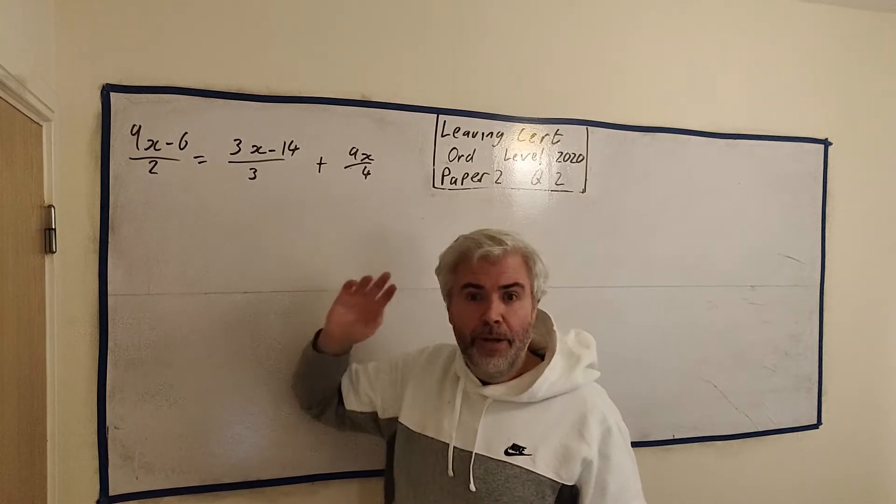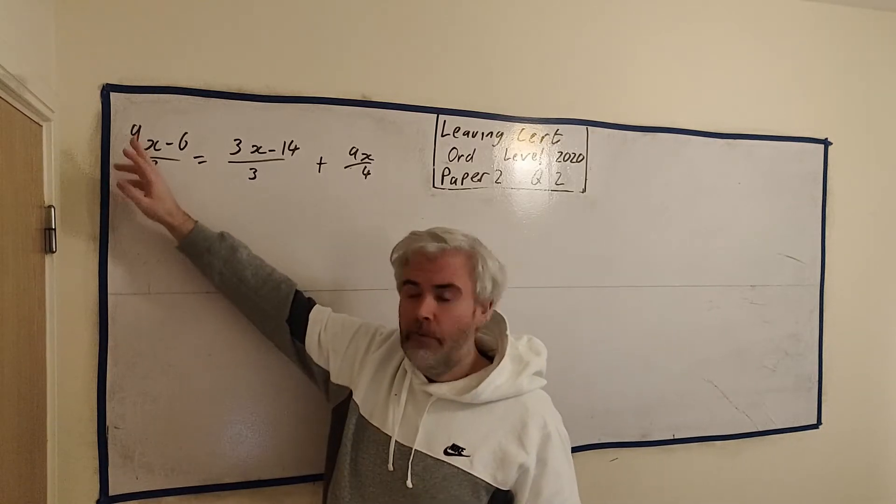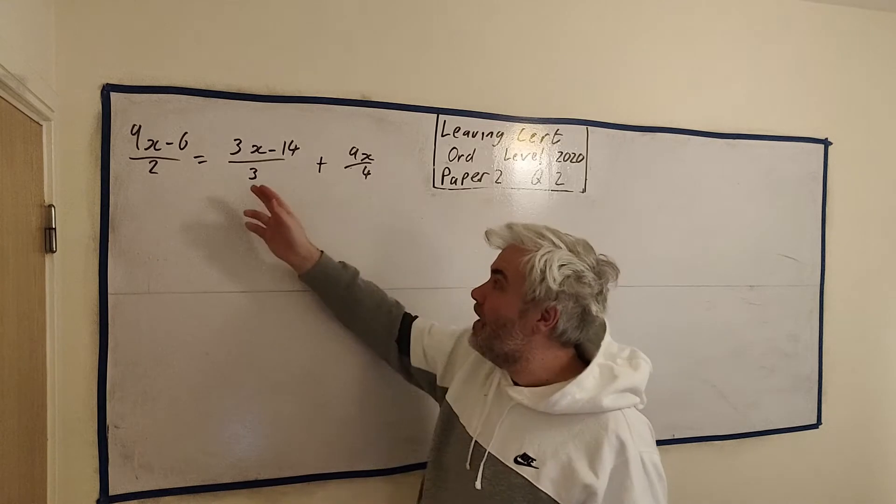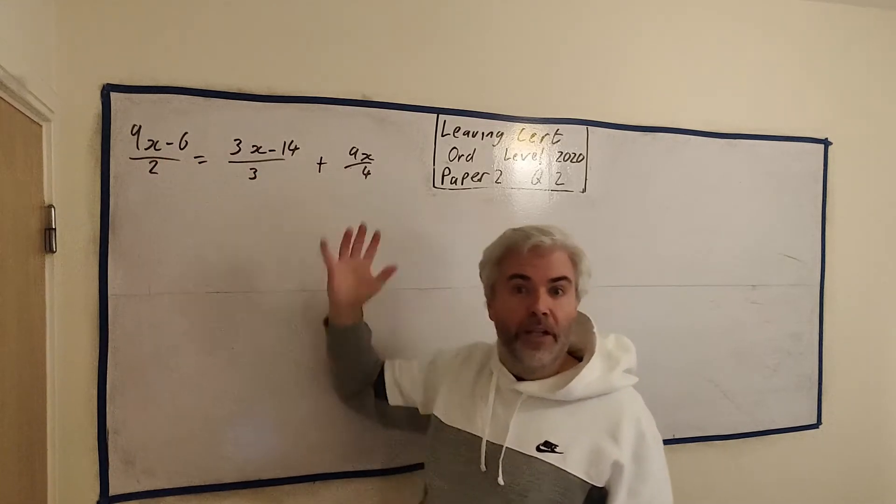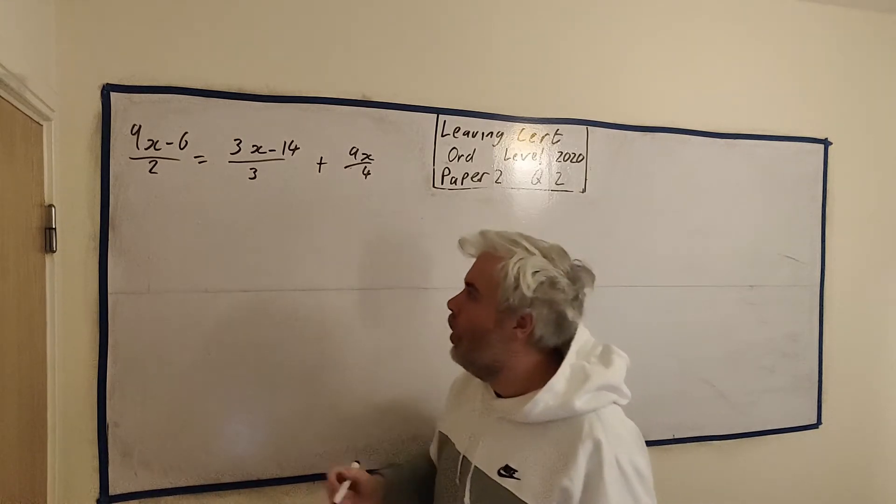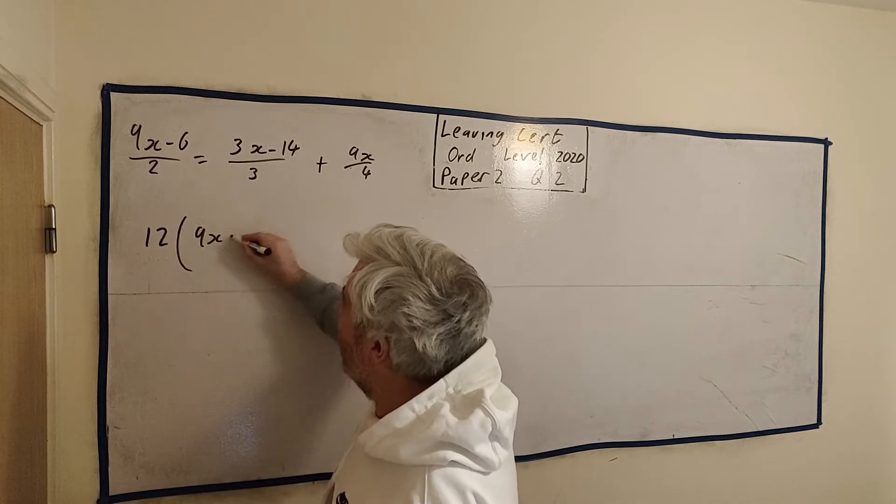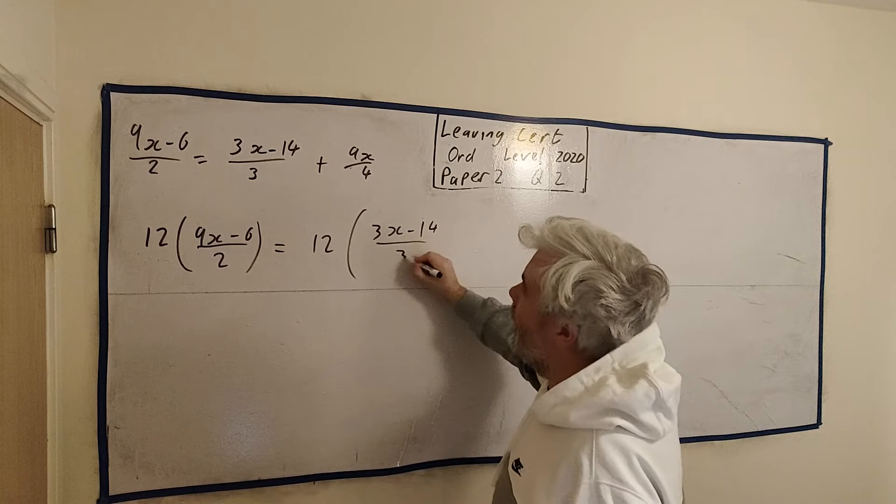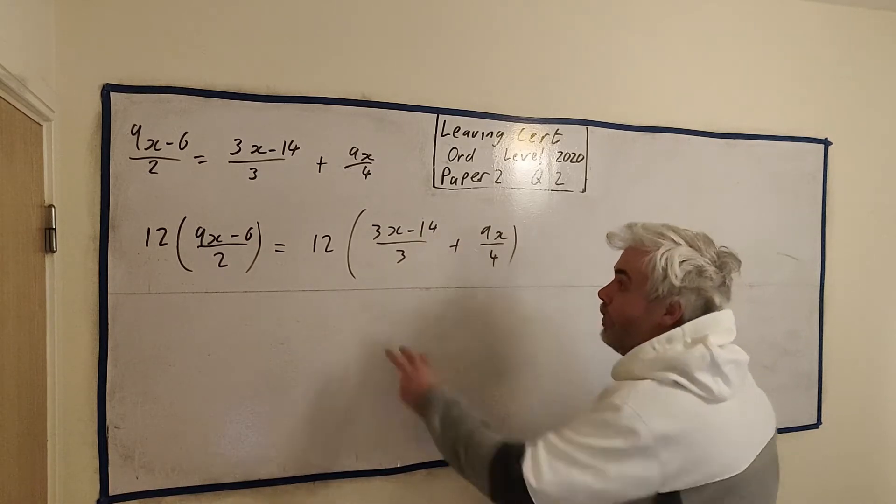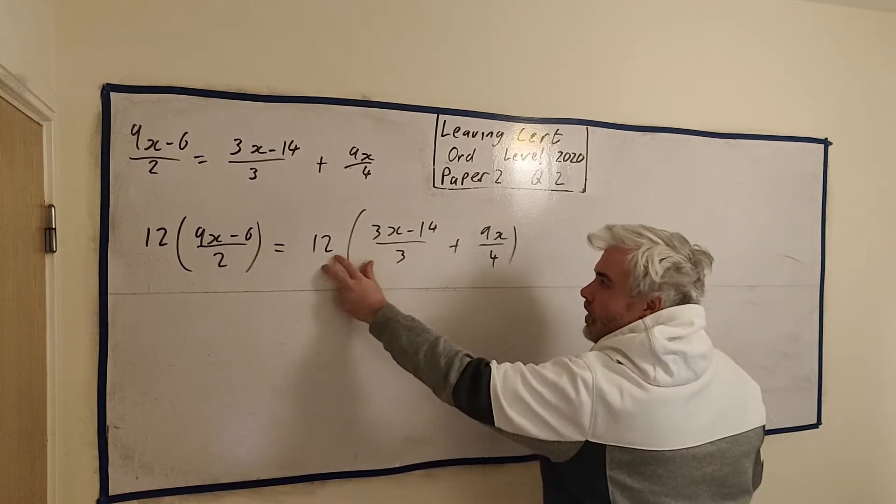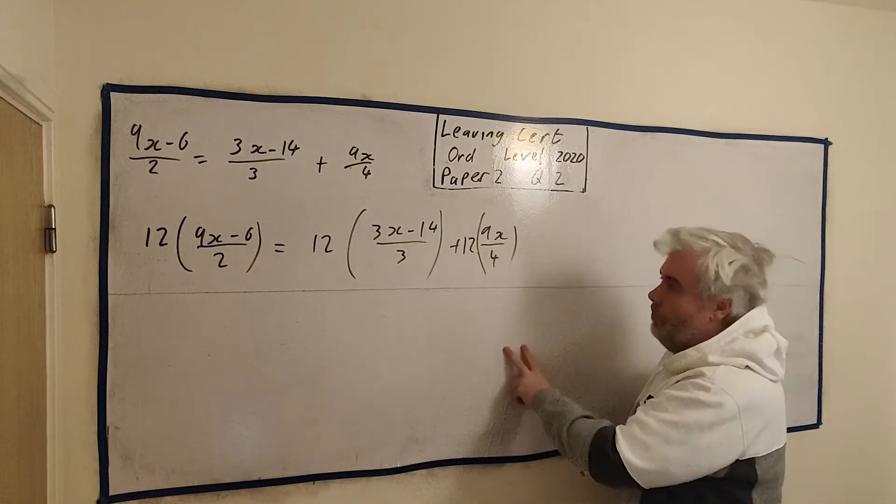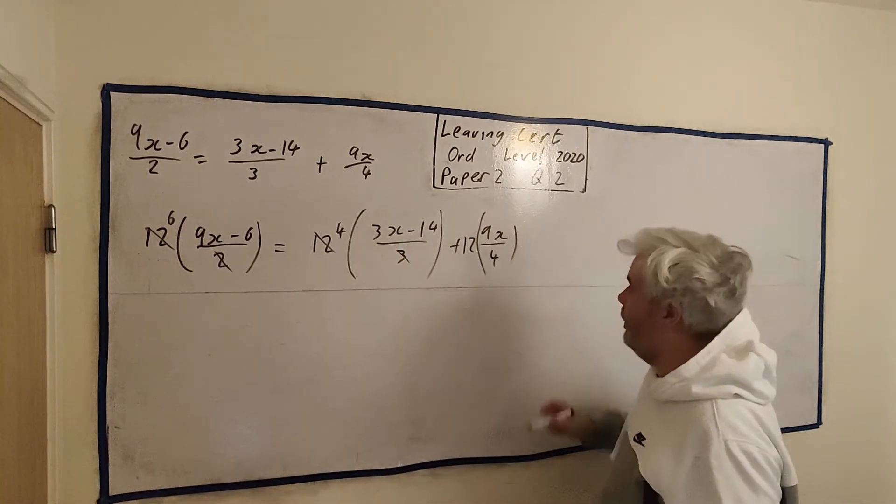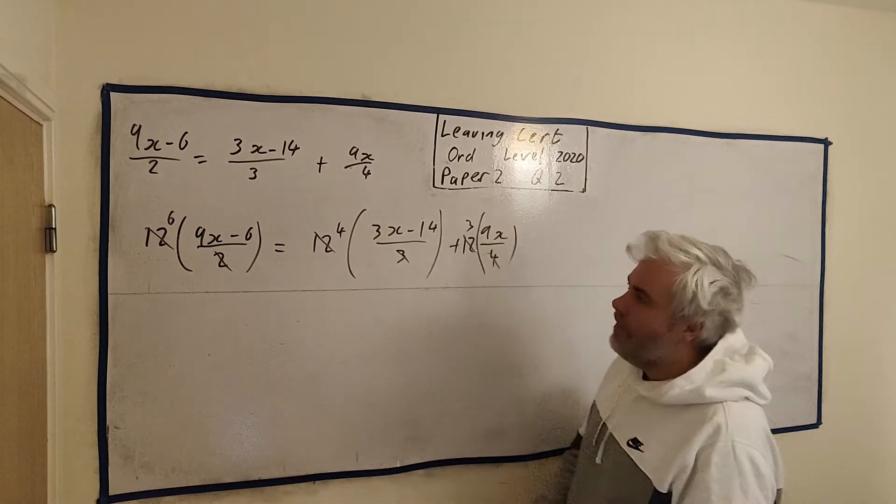Because we have an equals here, we can multiply everything on the right by 2 and multiply everything on the left by 2. That'll get rid of this 2. We could then do the same with 3 and then 4. But I can do it all in one go by doing 12. So I'm going to multiply 12 by 9x minus 6 over 2 equals, and I'm going to multiply the right-hand side by 12. Multiply works great with adding because it just goes into both of them. The 2 disappears and a 6 appears here. The 3 disappears and a 4 appears. The 4 disappears and a 3 appears.